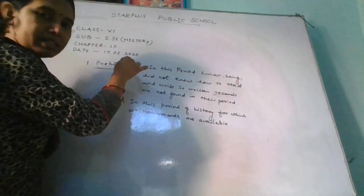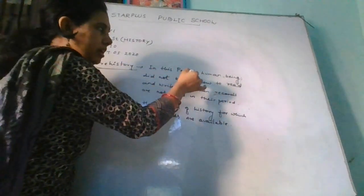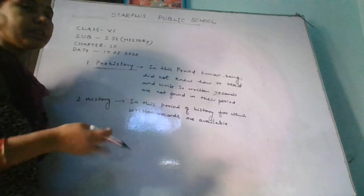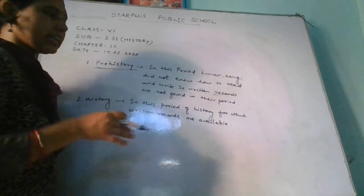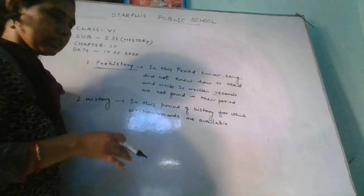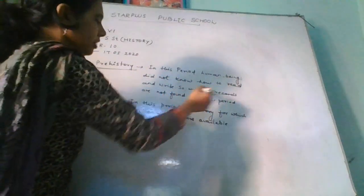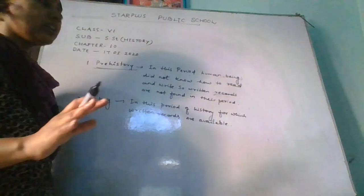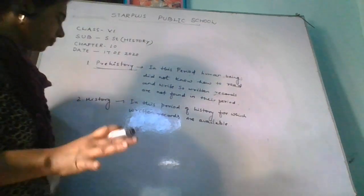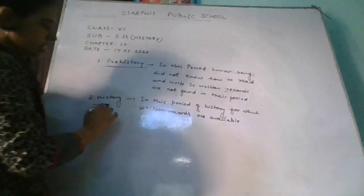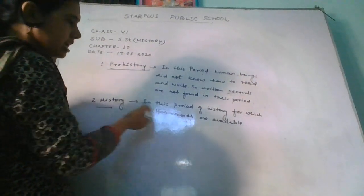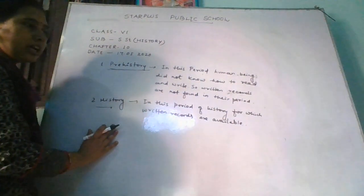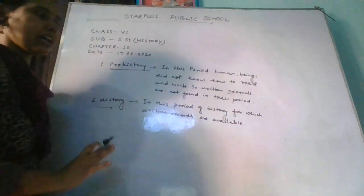Prehistory means the period before writing. In this period, there were no written records. History is the second period, for which written records are available. In this period, we had written records of all events.